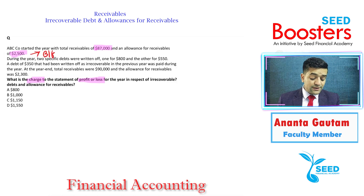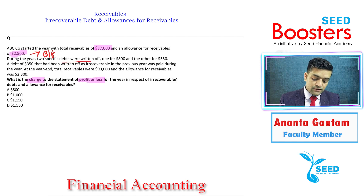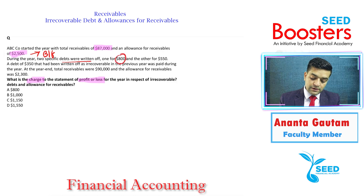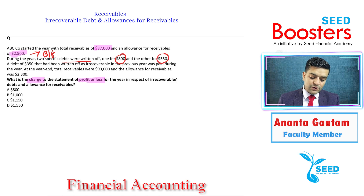During the year, two specific debts were written off — one for 800 and another for 550. So both are irrecoverable debts.